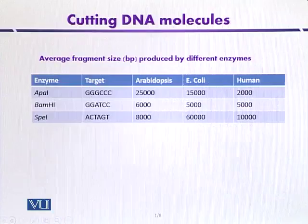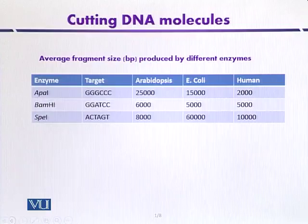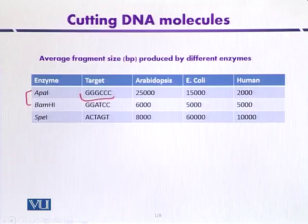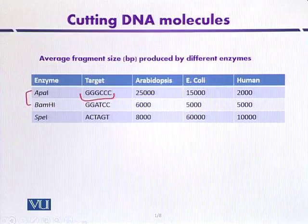This table indicates the average fragment size in base pairs produced by different restriction enzymes. Taking the first example, APA1 recognizes a six base pair sequence. In the case of Arabidopsis, which is a model plant, this sequence can be repeated after every 25,000 base pairs. In the case of E. coli it is 15,000 base pairs, and in the case of human it is 2,000 base pairs.